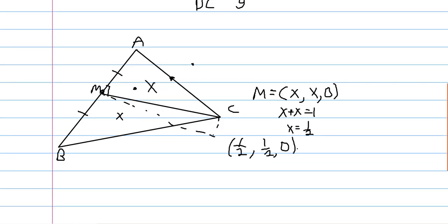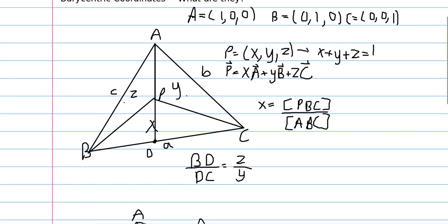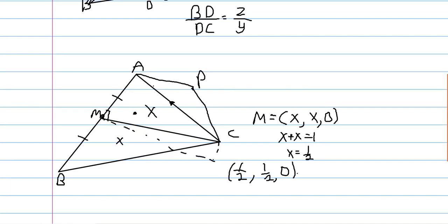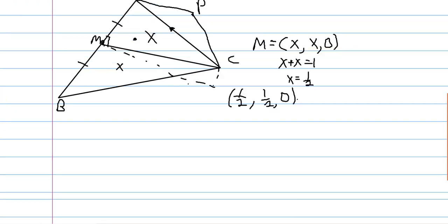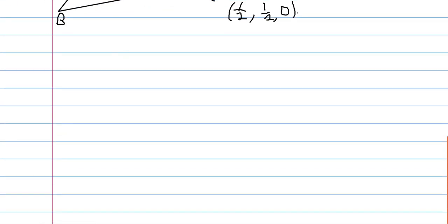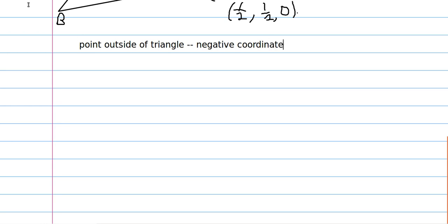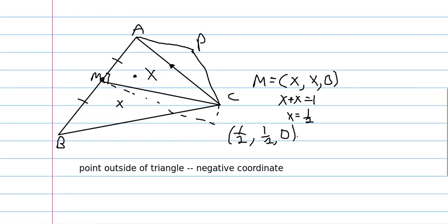Furthermore, if a point is outside of the triangle, it must have a negative coordinate. For example, looking at area PCA — it's very important to go in counterclockwise order — if PCA is clockwise, we negate the area. So if a point is outside the triangle it has a negative coordinate, if it's on a side it has a zero coordinate, and if it's inside all its coordinates are positive.